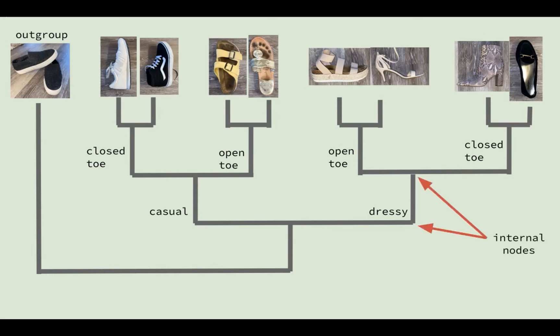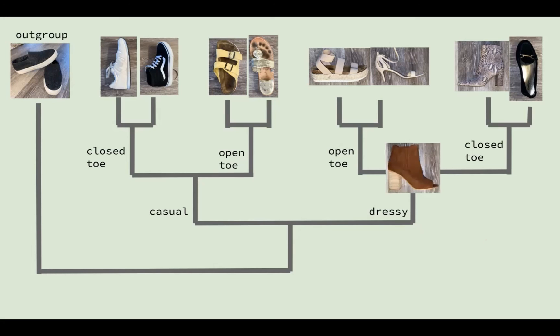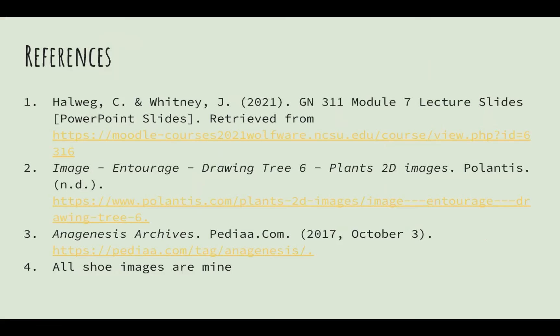These categories are connected by internal nodes, which represent a common ancestor that existed before divergence. For example, this node is the most recent common ancestor of my dressy closed and dressy open-toed shoes. This ancestor could be my peep-toed booties.